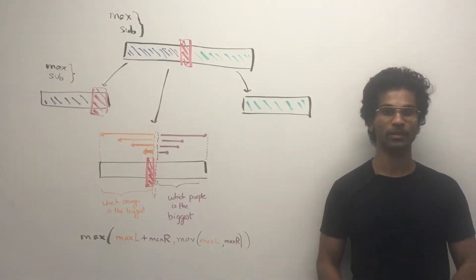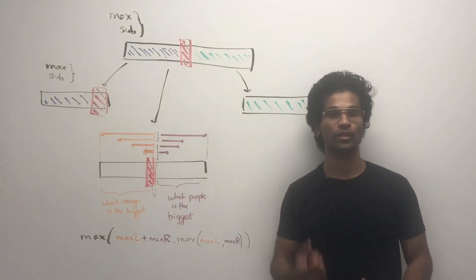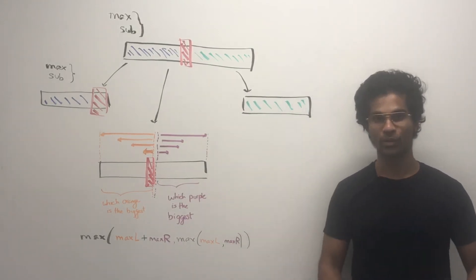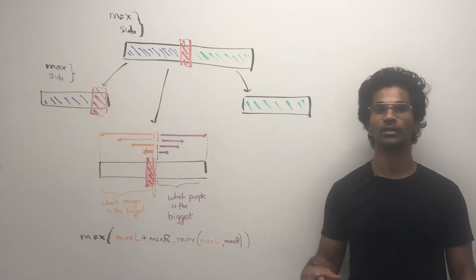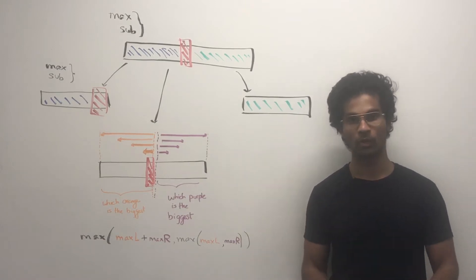Before I explain the diagram, let's go over a subtle difference between dynamic programming and divide and conquer. While both approaches take the original problem and divide it into subproblems, dynamic programming subproblems overlap while divide and conquer subproblems don't overlap.